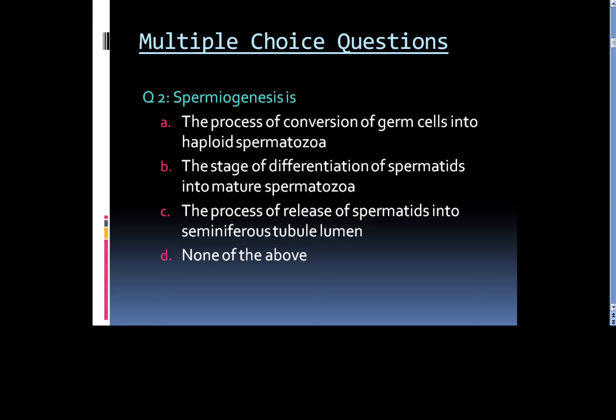Question number 2: Spermiogenesis is: A. The process of conversion of germ cells into haploid spermatozoa, B. The stage of differentiation of spermatids into mature spermatozoa, C. The process of release of spermatids into seminiferous tubule lumen, or D. None of the above.